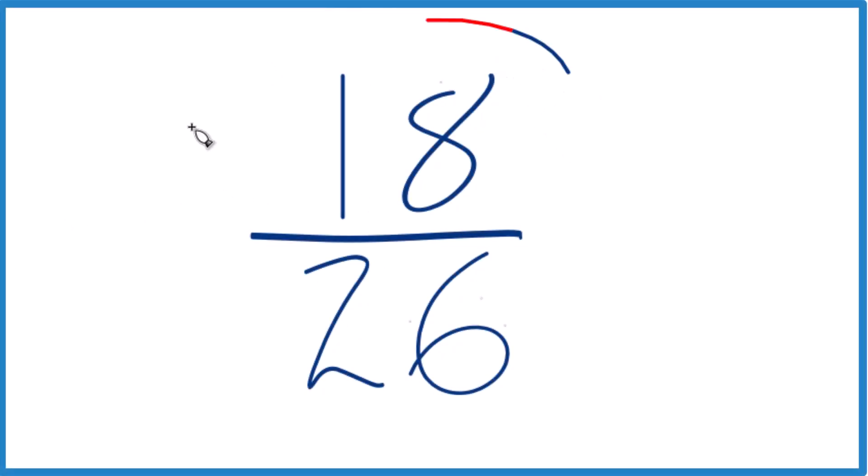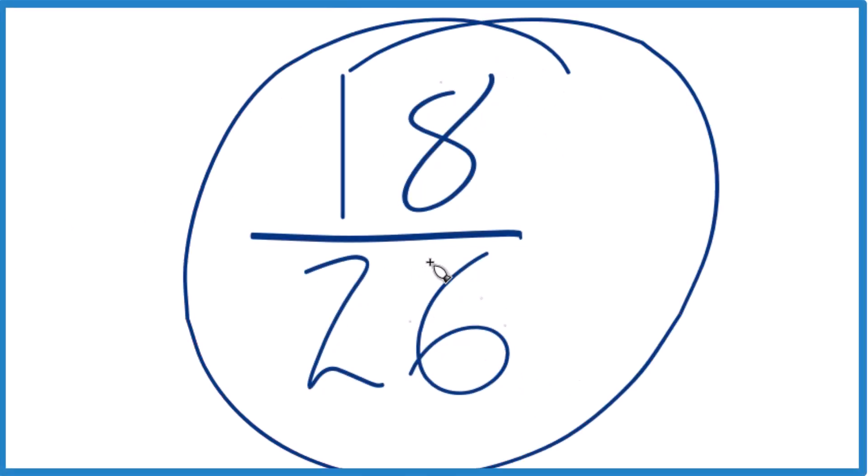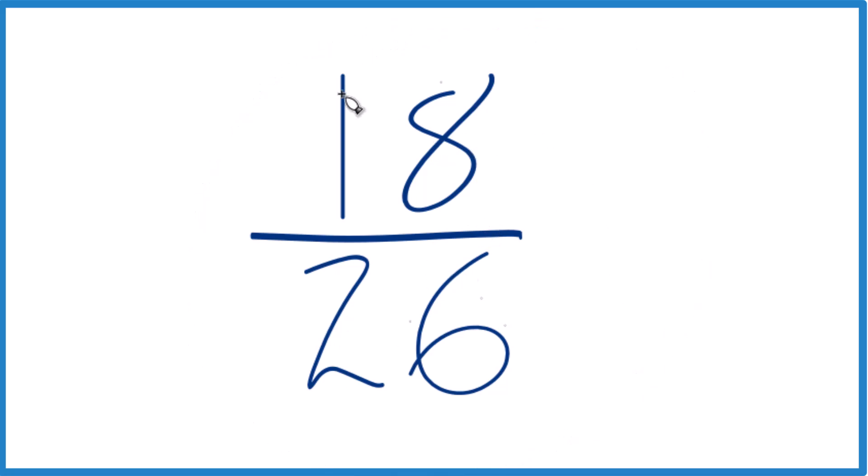Let's simplify the fraction 18/26, so 18 over 26. How do we get this into lowest terms, reduce it down to its simplest form?